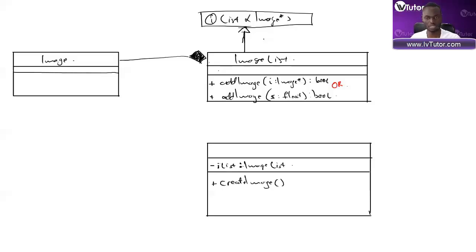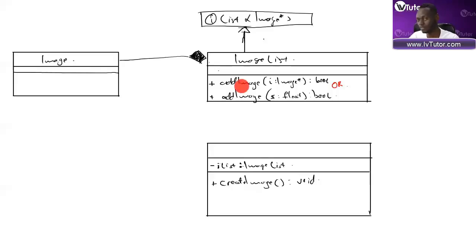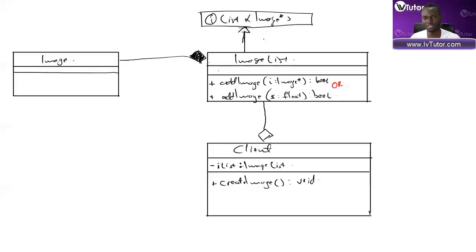Maybe I've got a function called create_image - a void function. Within this function, I ask the user to give me the size of the image, take that size and create the image, then take that image and call the add_image function of this list. So my Dialogue - which I'll call my client - has an aggregation relationship with my ImageList.